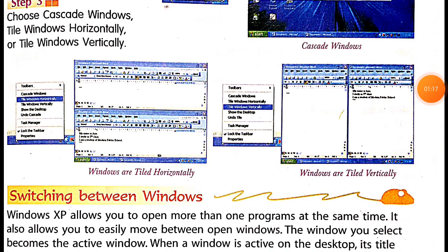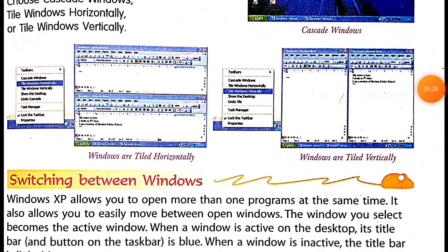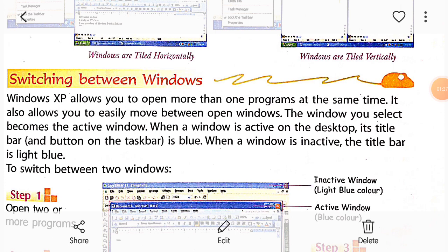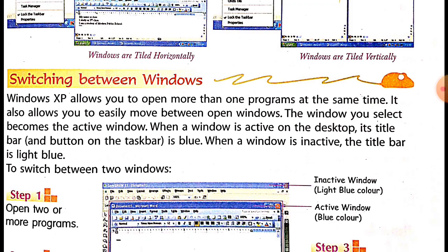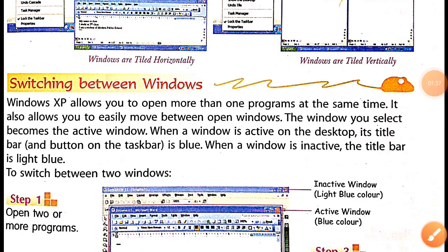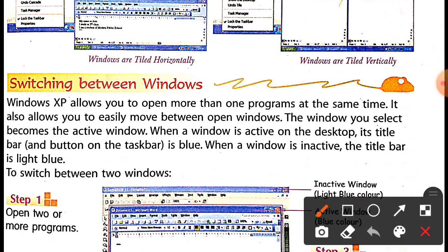How can we switch between two windows? Windows XP allows you to open more than one program at the same time. It also allows you to easily move between open windows.